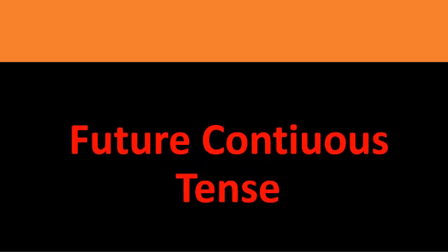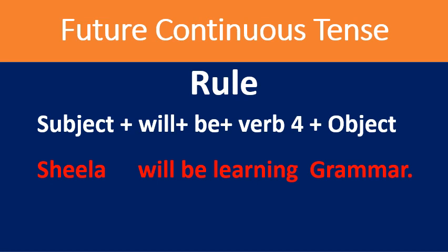Now I take you to future continuous tense, also called future progressive tense. Future continuous tense is used to refer to an action that will happen at a specific time in the future and will be continuing. The rule is: subject + will + be + fourth form of verb (verb + ing) + object. For example: 'Sheila will be learning grammar.' 'I will be learning grammar.' 'They will be learning grammar.' These are examples of future continuous tense.